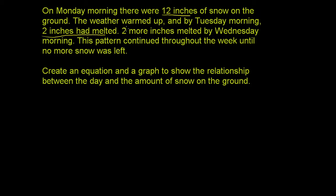So they're essentially saying that we had 12 inches of snow on the ground on Monday, and that every day after that, two inches melted. After Tuesday, you'd have 10 inches, and after Wednesday, you'd have 8 inches. That pattern continued.